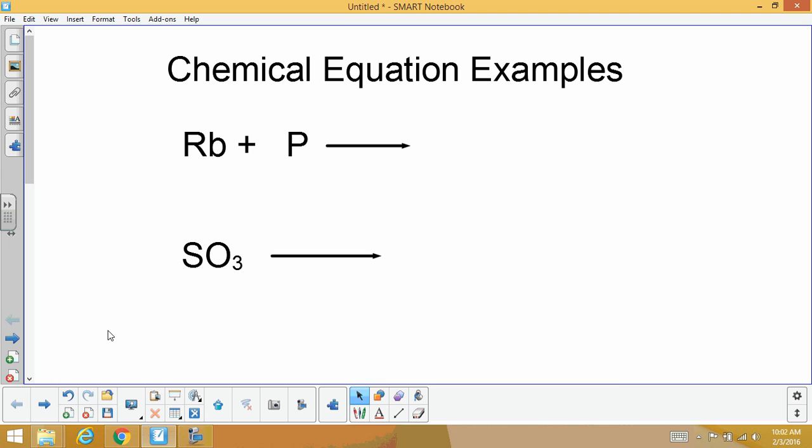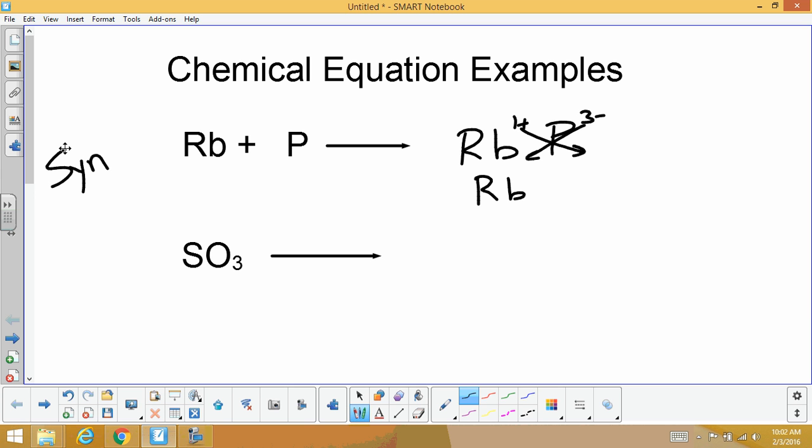And since it is a synthesis equation, the only thing we have to do is put these two together. We'll put rubidium, phosphorus, we'll find their charges. For rubidium, we've got one plus. And for phosphorus, we're looking on our periodic table, we've got three minus. We cross them. We end up with rubidium phosphide, which is Rb3P.